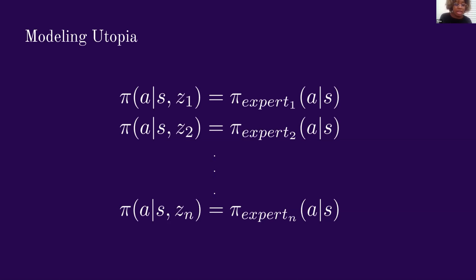For example, pi of A conditional on state S and Z of N could correspond exactly to pi of expert N.